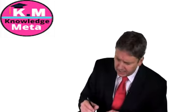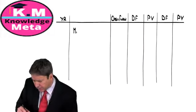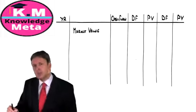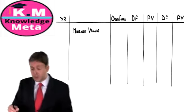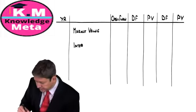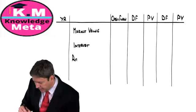Once we've got those, it's simply a case of entering the numbers. Remember we have three cash flows: we have the market value — that's the value today — we've got the interest, and finally we have our redemption value.